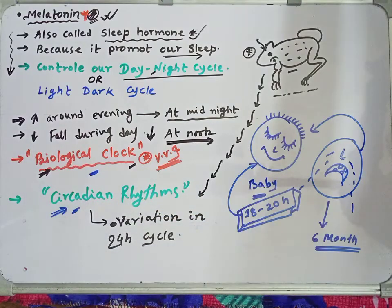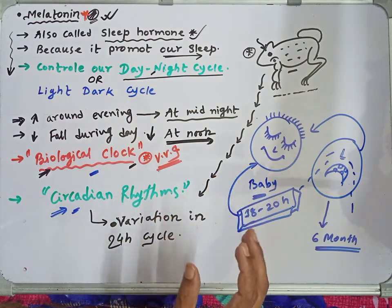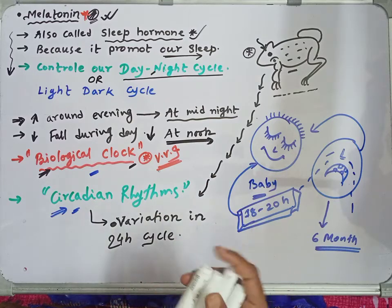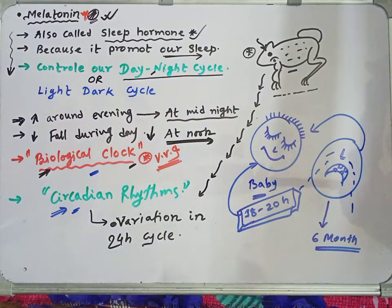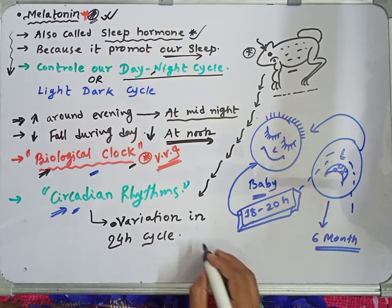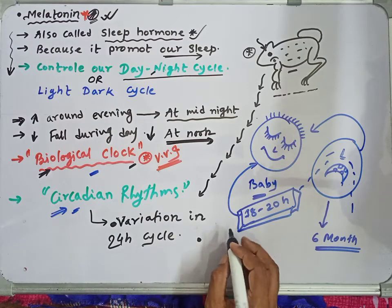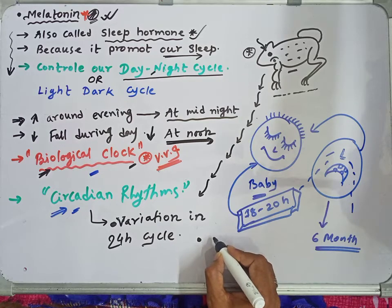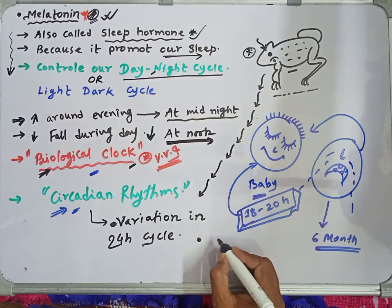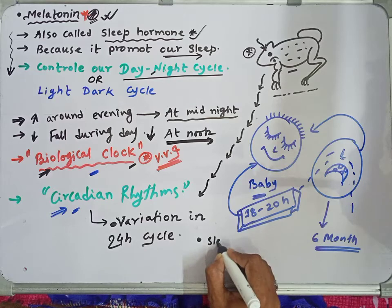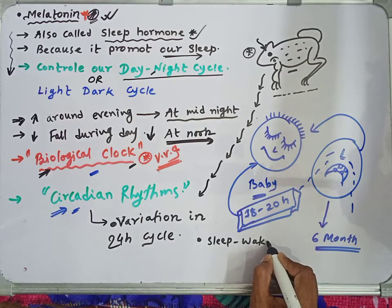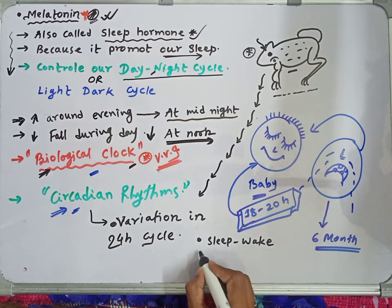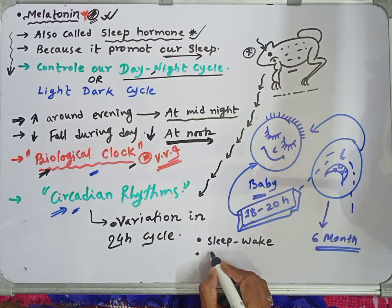Regarding the pineal gland and melatonin, the pineal gland controls our sleep and wake cycle — deciding when we sleep and when we wake up. It also controls our body temperature.